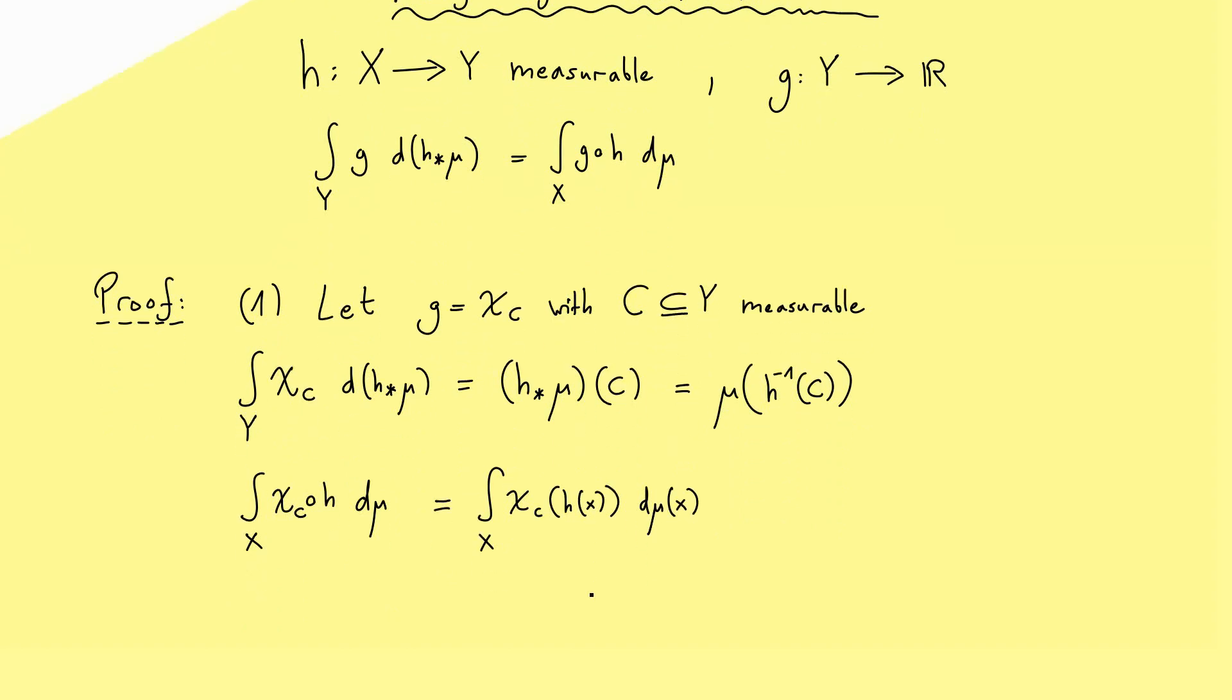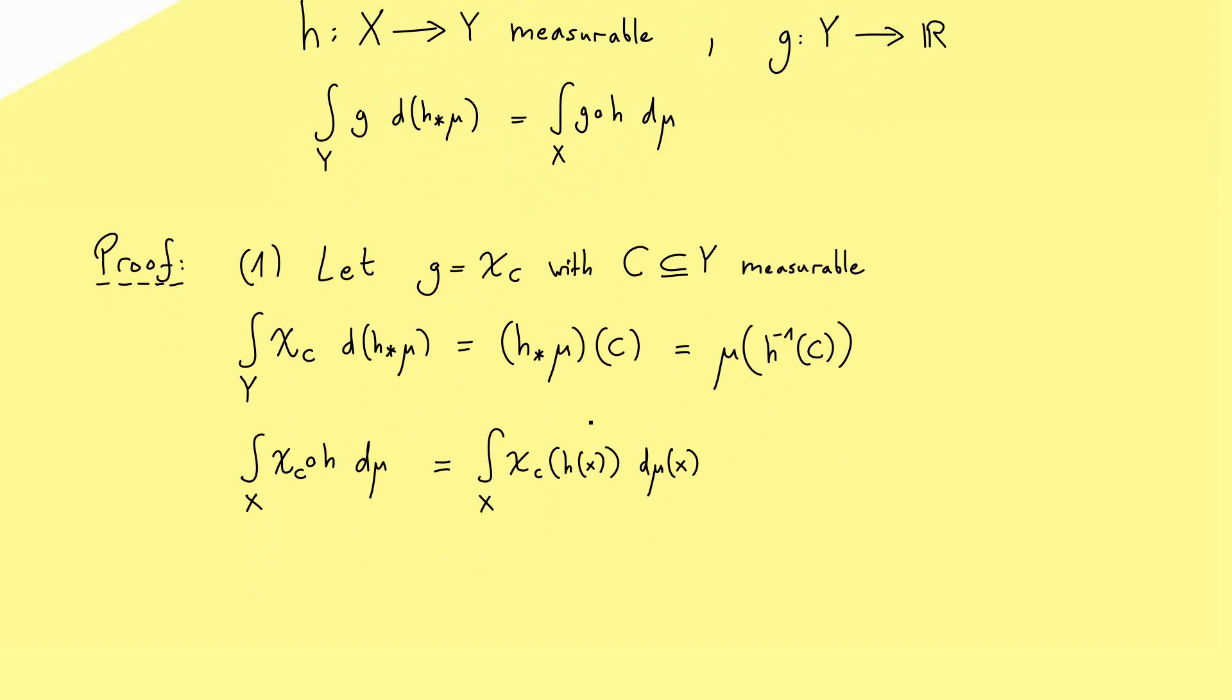At this point, it's a good thing to note what this characteristic function really is. Of course, we know that we only have the values 1 and 0, and we also know that this is only 1 in the case that h(x) lies in the set C. But of course, we can rewrite this such that x lies in the pre-image of C. This is exactly the same, and the same here for 0 is not in the pre-image of C.